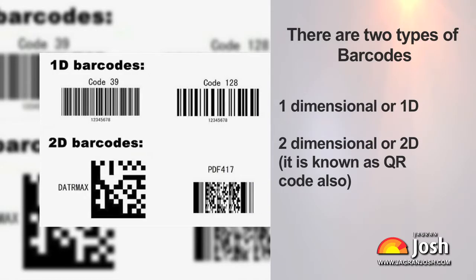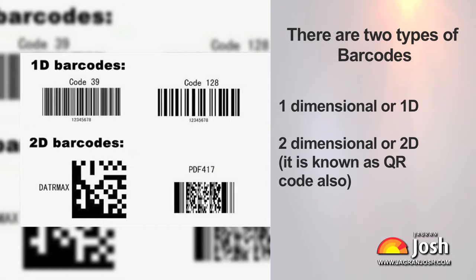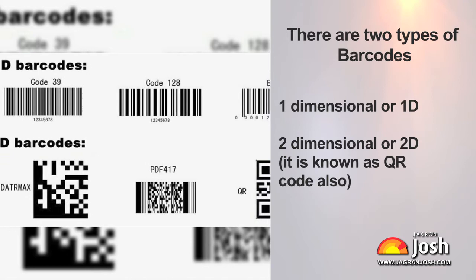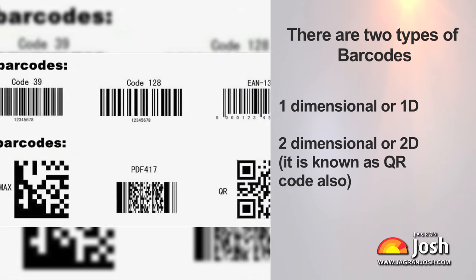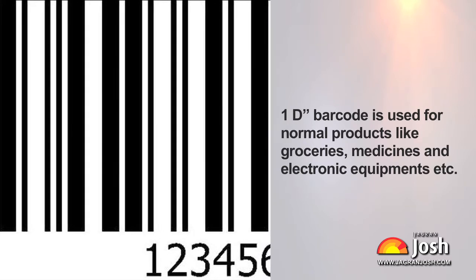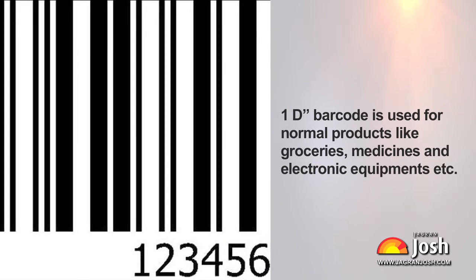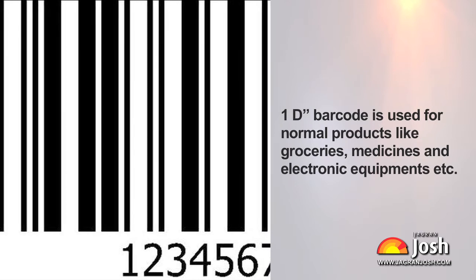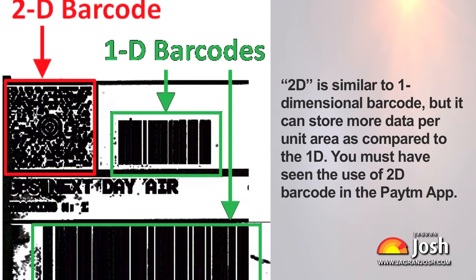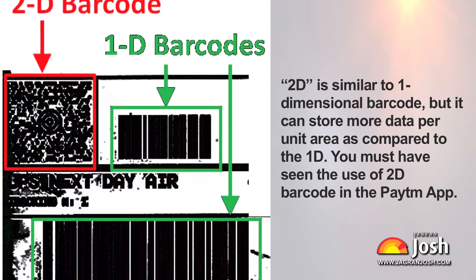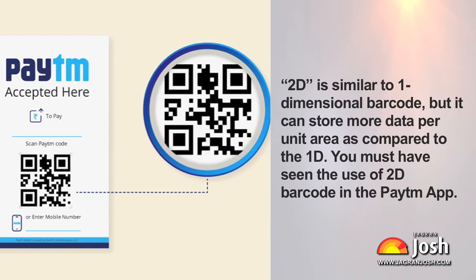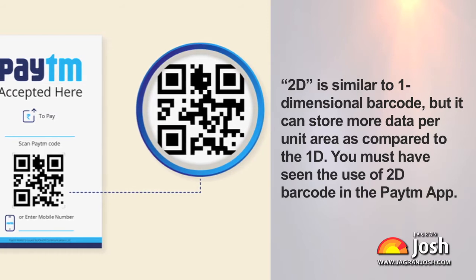There are two types of barcodes. The 1D barcode is used for normal products like groceries, medicines, and electronic equipment. The 2D barcode is similar to the 1D barcode but it can store more data per unit area. You must have seen the use of 2D barcodes in the Paytm app.